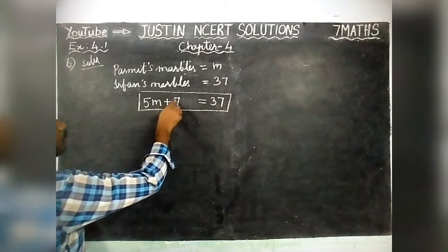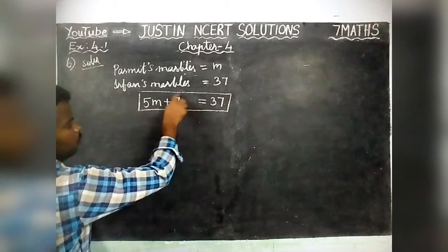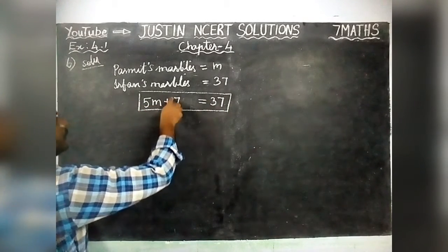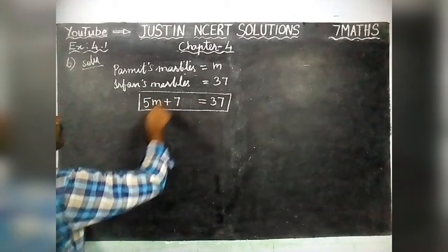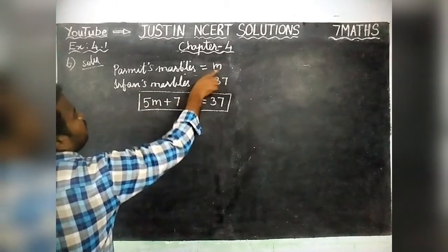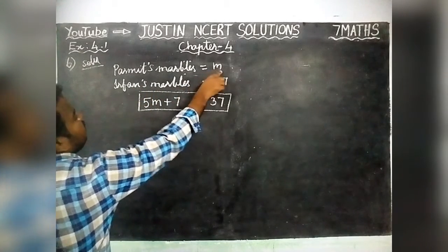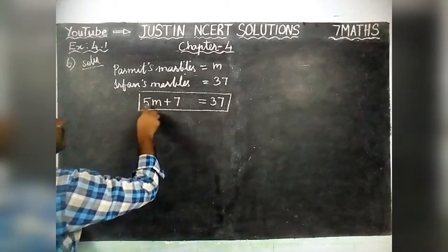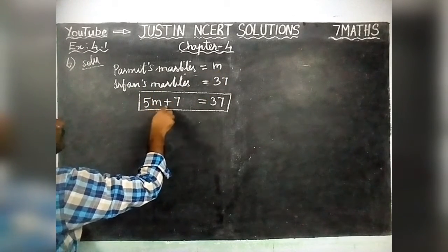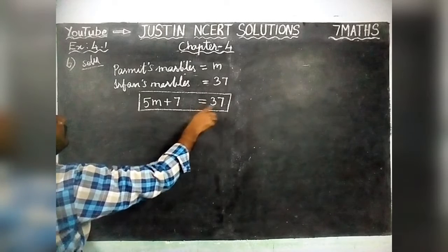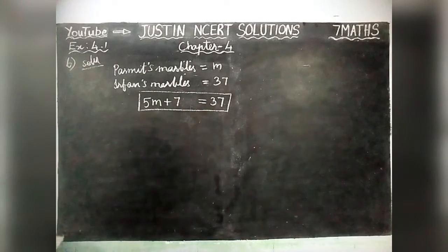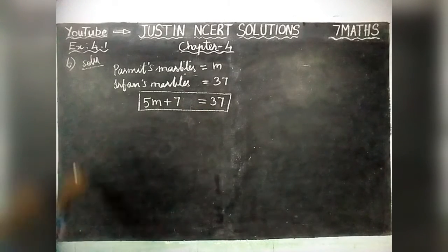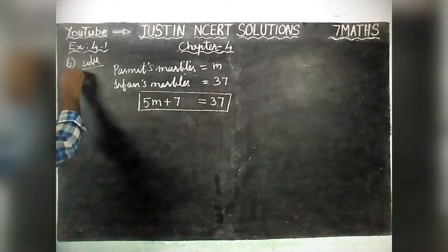7 marbles more than 5 times of Permit's marble. So, Permit's marble is equal to M. 5 times of Permit's marble plus 7 is equal to Irfan's marble, so Irfan's marble is equal to 37. This is the 1st equation.